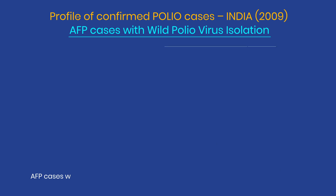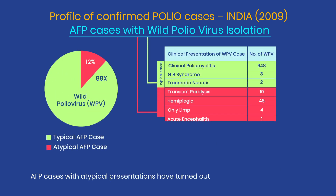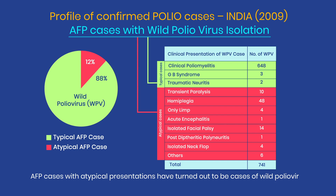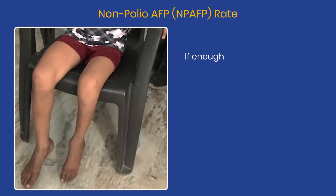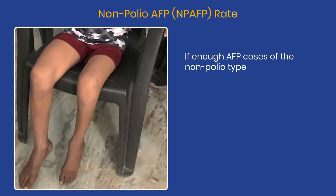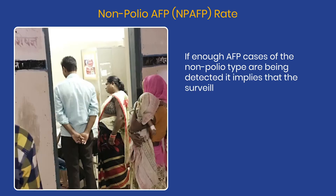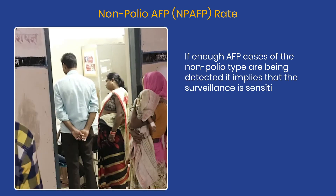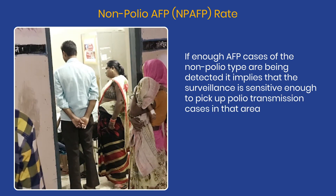AFP cases with atypical presentations have turned out to be cases of wild polio virus in the past and have helped in identification of areas of WPV transmission. If enough AFP cases of the non-polio type are being detected, it implies that the surveillance is sensitive enough to pick up polio transmission cases in that area.